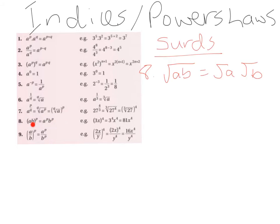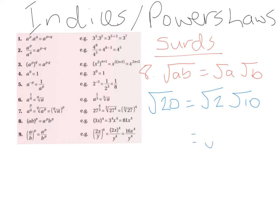We can also use Law 8 to help us with surds. Root of AB equals root A multiplied by root B. For example, the square root of 20 is the same as the square root of 4 multiplied by the square root of 5, because 4 times 5 is 20. We prefer root 4 times root 5 because 4 is a perfect square. The square root of 4 is 2, and the square root of 5 can't be simplified, so we get 2 root 5.